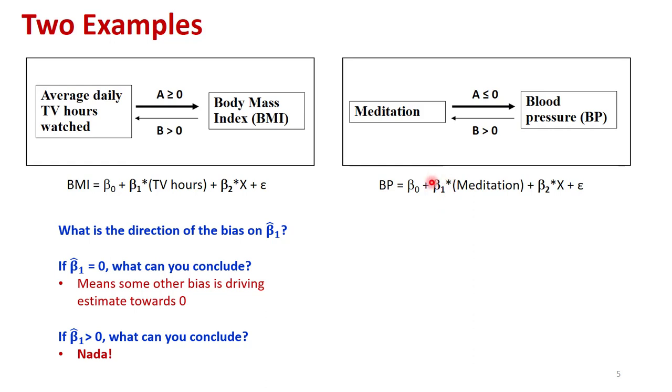Our estimate for beta one here is going to represent how these two variables move together holding those other factors constant. The first question, what is the direction of the bias on beta one hat that is from reverse causality? Well, it should be positive here because of the positive reverse causality, just like in the other case.